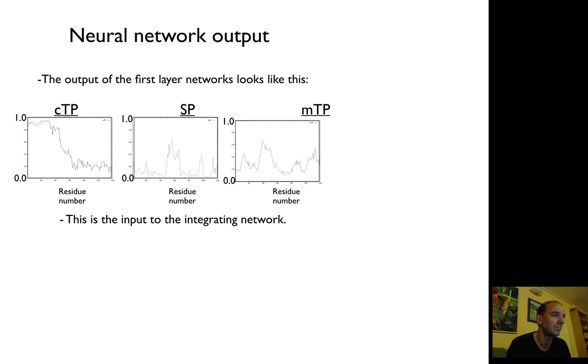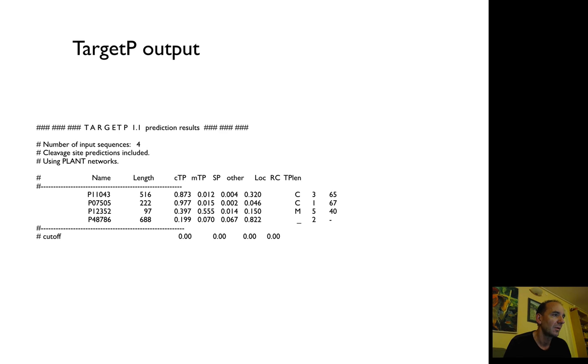You can take a protein here and you see that P11043 has a length of 560 amino acids. It has a chloroplast total of 0.87, mitochondrial of 0.02, and signal peptide of 0.04. It's very reliable with a reliability of 2, so the location is quite clearly predicted as chloroplast. You have a reliability measure based on the difference between the highest and second-highest scores.